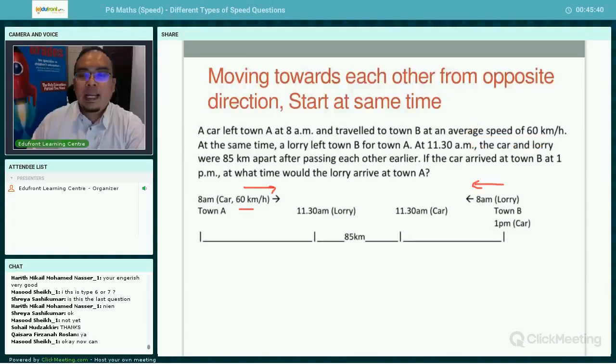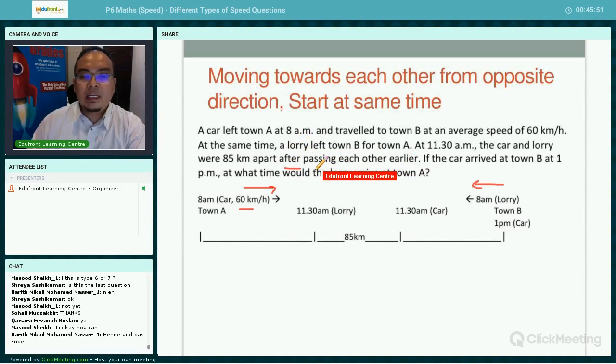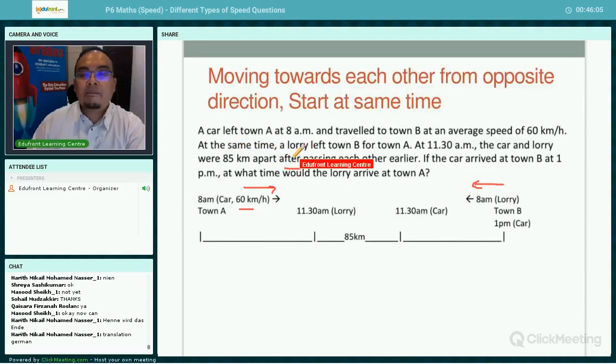So at 11:30 a.m., the car and the lorry were 70 kilometers apart after passing each other earlier. Now take note here. After passing each other, that means the lorry would have traveled up to this point, and then the car would have traveled at this point. Because they say that they have passed each other. So at this point is 85 kilometers. And what time is at this point when they were 85 kilometers away? It is at 11:30 a.m.